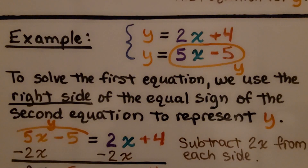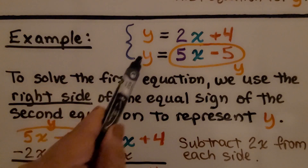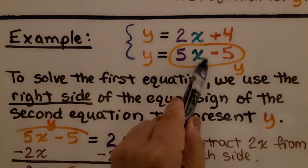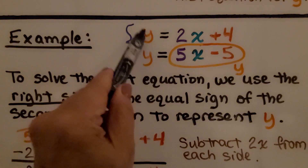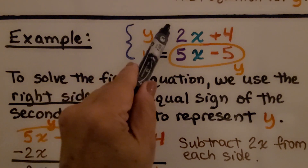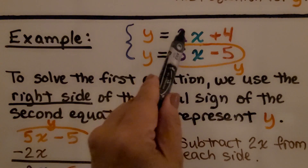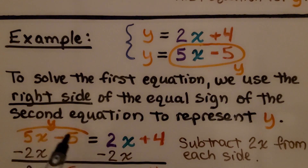Here's our example. We have our two equations, and since this one says y equals 5x minus 5, instead of writing the equation as y equals, we're going to write it as 5x minus 5 equals 2x plus 4. We're going to use 5x minus 5 as our y.